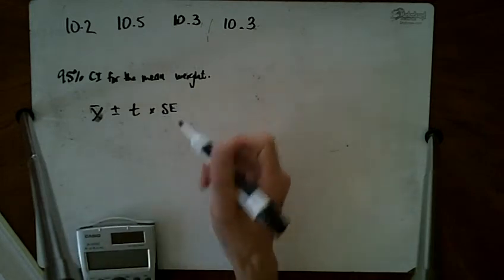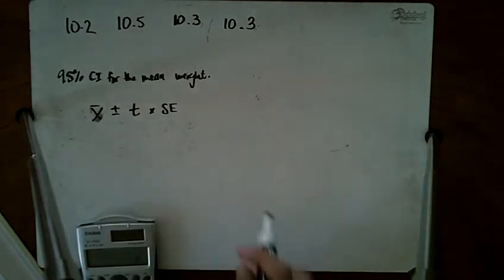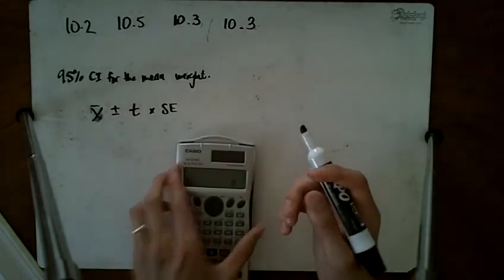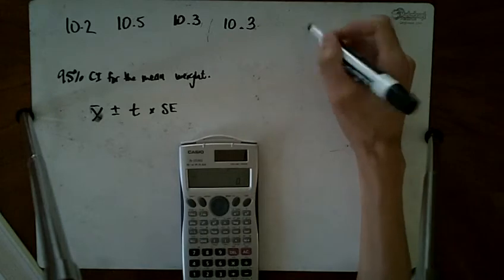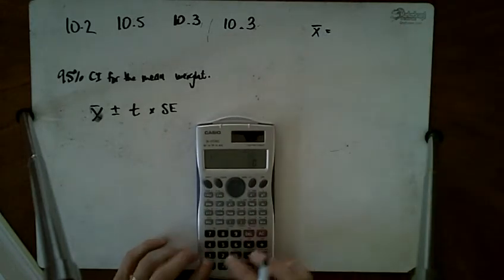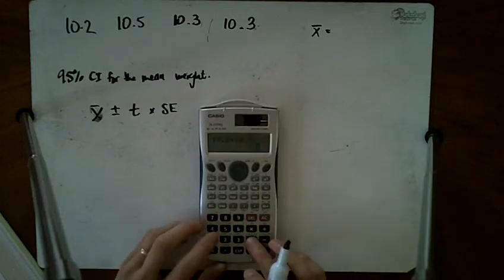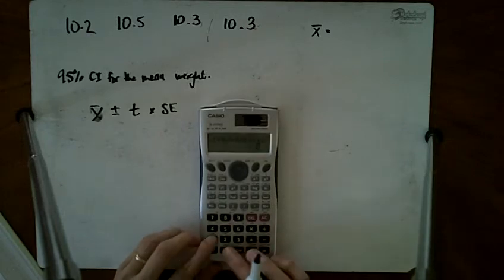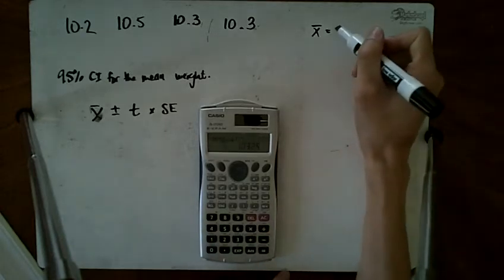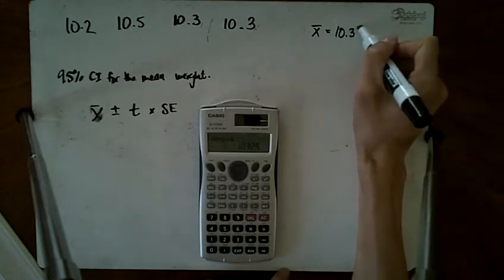The standard error calculation is involved because we first need to find the standard deviation. First, we find x̄ by adding up the four numbers: 10.2 plus 10.5, 10.3, 10.3, divided by four. So x̄ is 10.325.